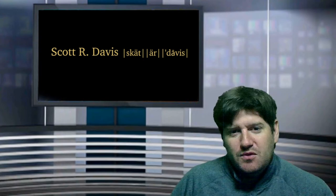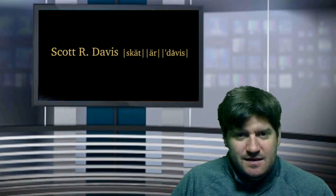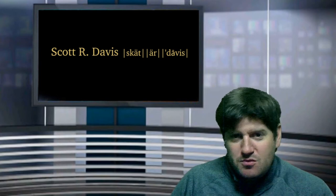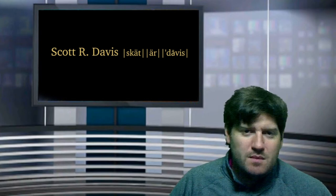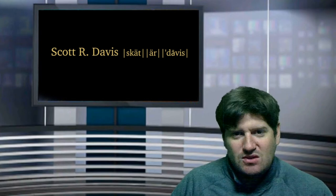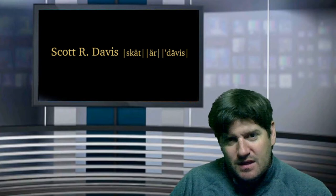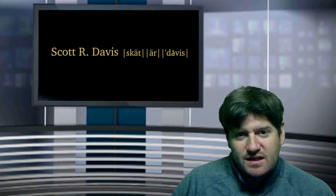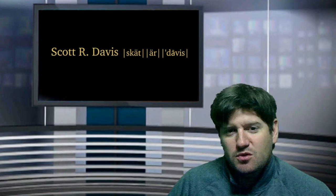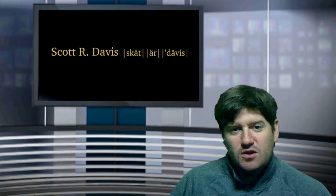First up, the Rebel Ransomware Gang has begun to auction data belonging to Madonna from the Grubman, Shire, Meiselas, and Sachs law firm in New York City. This Rebel Ransom gang, through that breach, has already announced that they have a trove of data in regards to President Trump, that they have planned to auction separately or sell to the highest bidder.